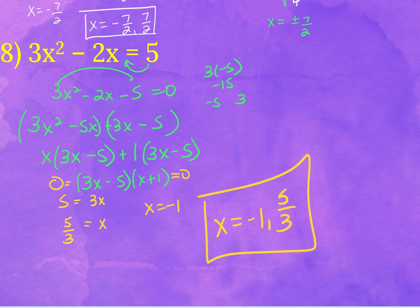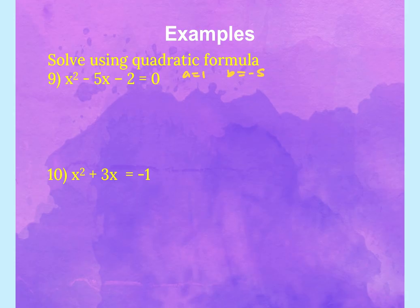You've got to look for the factors using first times last — factors of that product that sum to the middle. It was negative 5 and 3. Put them back in with an x on each of them — they take the place of the middle term. Then factor by grouping: the first term stays, the last term stays, and the middle term gets replaced with those two.